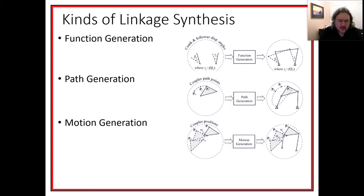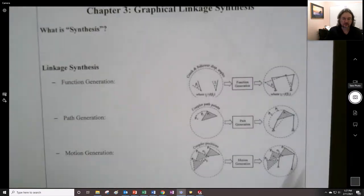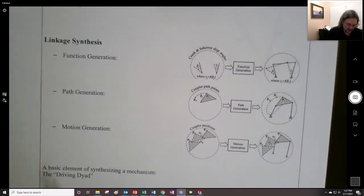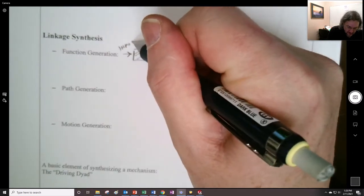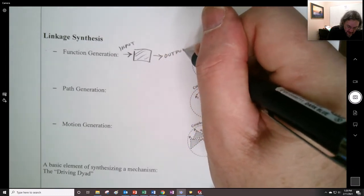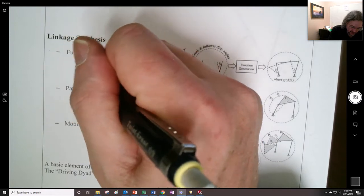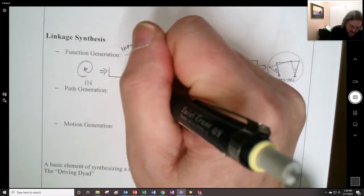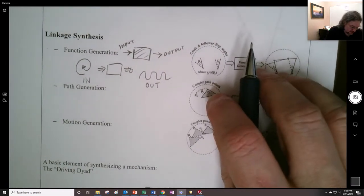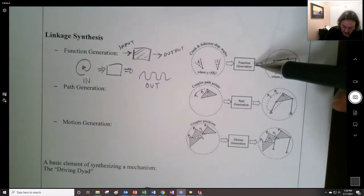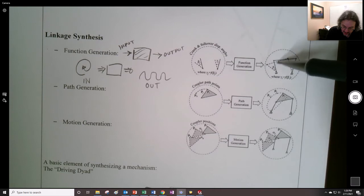Many mechanism books talk about linkage synthesis by talking about different generations. For function generation, I think of it as being sort of like a box, where we have input and output. Maybe we have some function coming in, like we spin in, goes into the box, and output we get something out. Some process where we're generating, like, this is a crank or a follower, displacement angles, and the function now is to have some type of thing happening to the coupler.